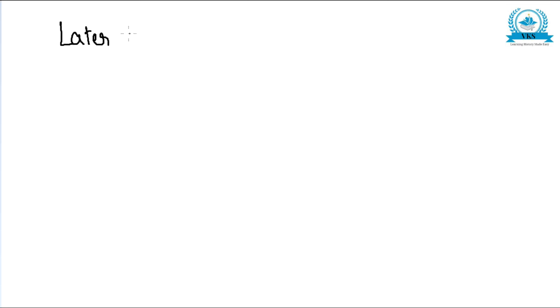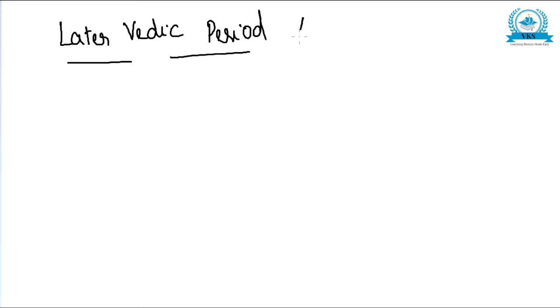Today's video is about the Later Vedic period. In the last video we saw about the early Vedic or Rig Vedic period. The time period of the Later Vedic period is almost from about 1000 to 600 BC. This period was marked by the expansion of Aryans.